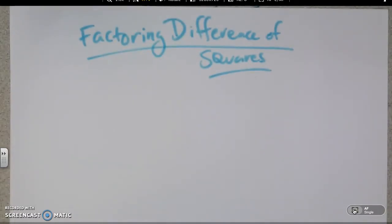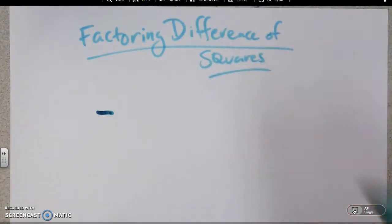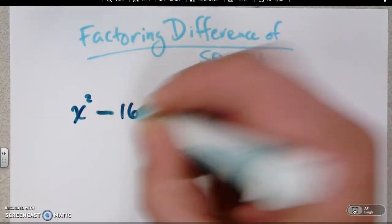Okay, so a couple things. First thing, what the hell does that mean? Well, difference in math means subtraction and squares in math, we're not talking about geometric squares. We're talking about number squares. So a square would be like x squared, and a square would be like 16.